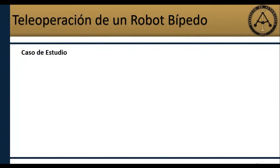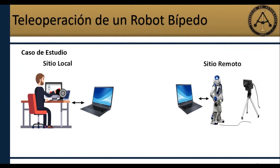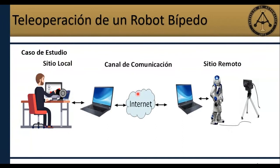Buenas tardes. Esta exposición se trata de la teleoperación de un bípedo. Tenemos un operador humano ubicado en un sitio local que es San Juan, Argentina, que trata de operar un robot humanoide ubicado en Japón o Alemania, a través de un canal de comunicación que es el Internet. Este canal presenta retardos intrínsecos variantes en el tiempo, que puede causar un bajo rendimiento o inestabilidad en la ejecución de la tarea.